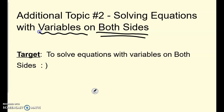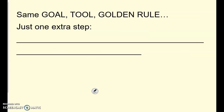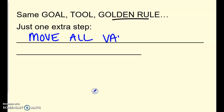You have to fill in the blank on your note sheet. We're going to look at equations where you have variables in more than one spot. It's the same goal — you're still trying to isolate the variable. Use the same tools: inverse operations to get the variable by itself, and the same golden rule of keeping things balanced. But now the one extra step is that you have to move all of the variables to one side first.